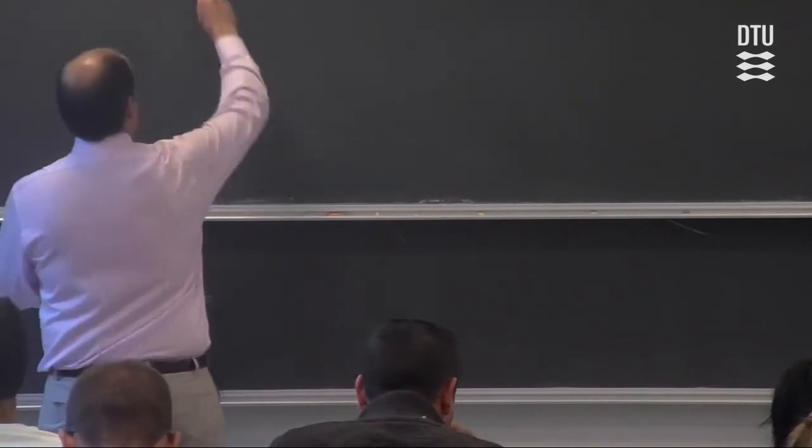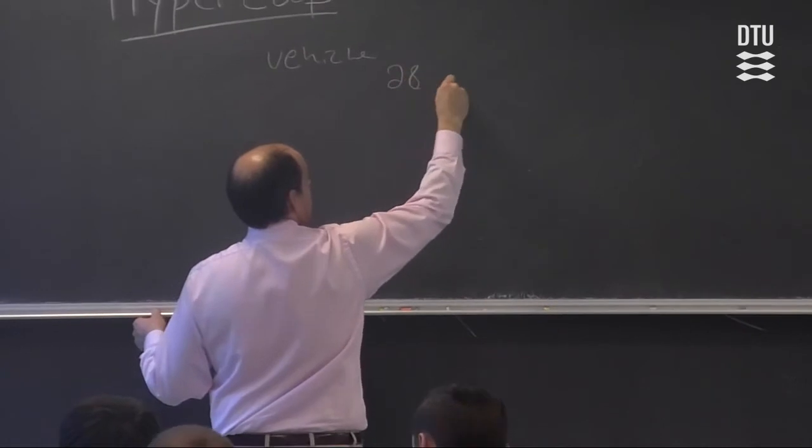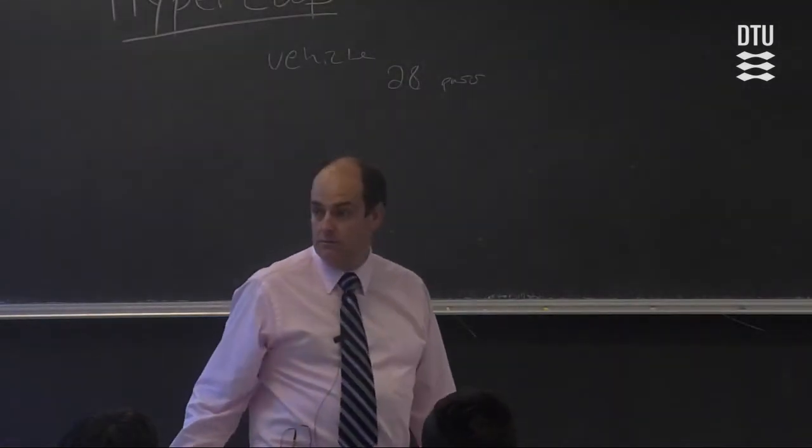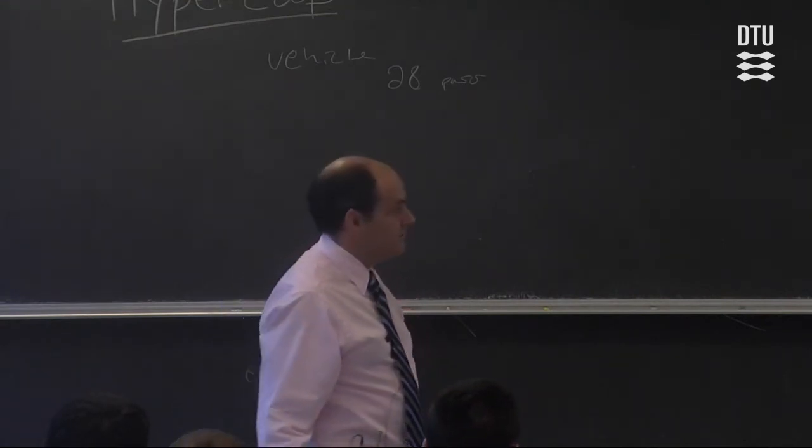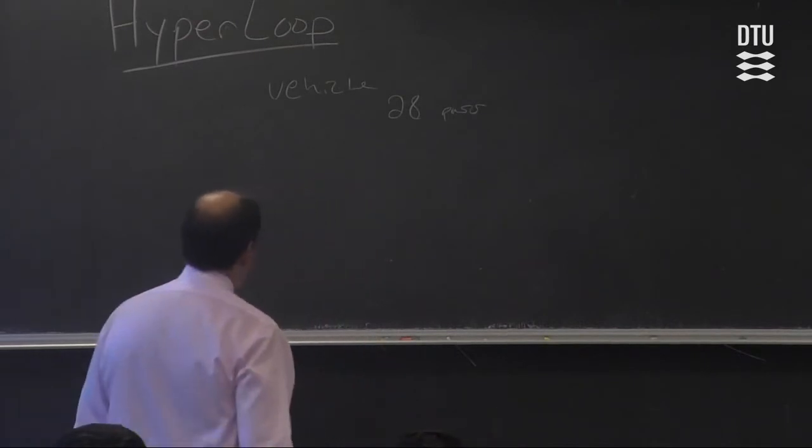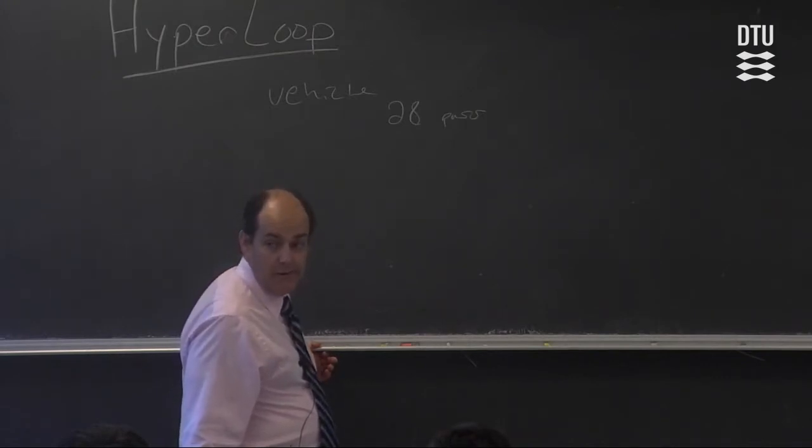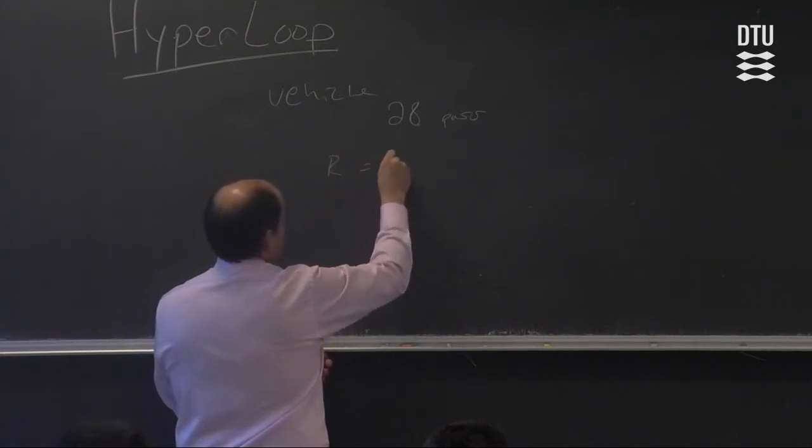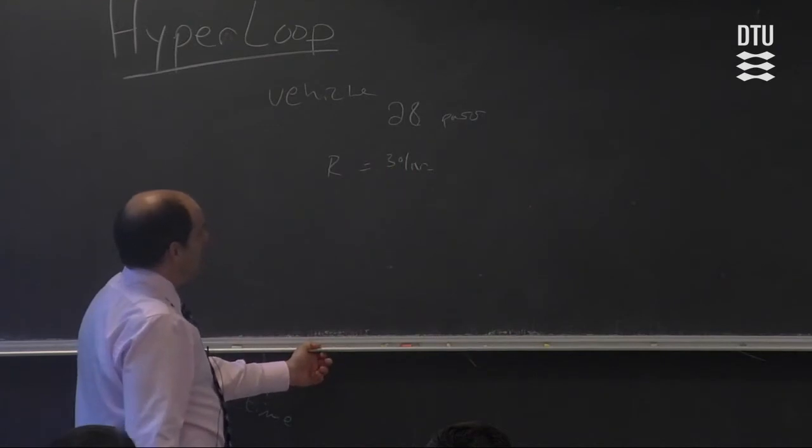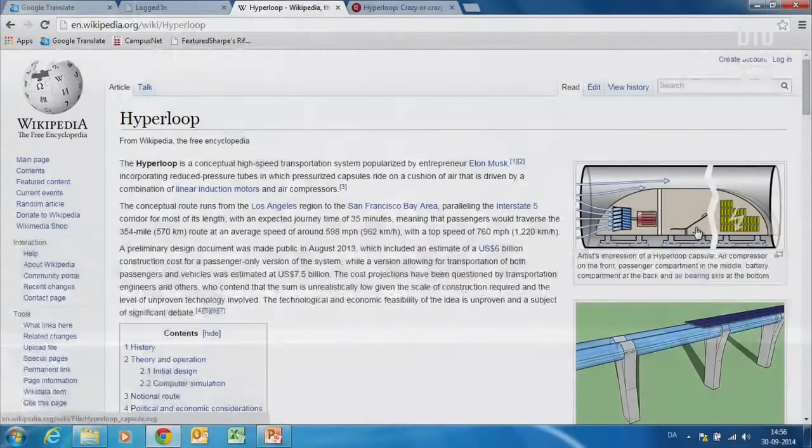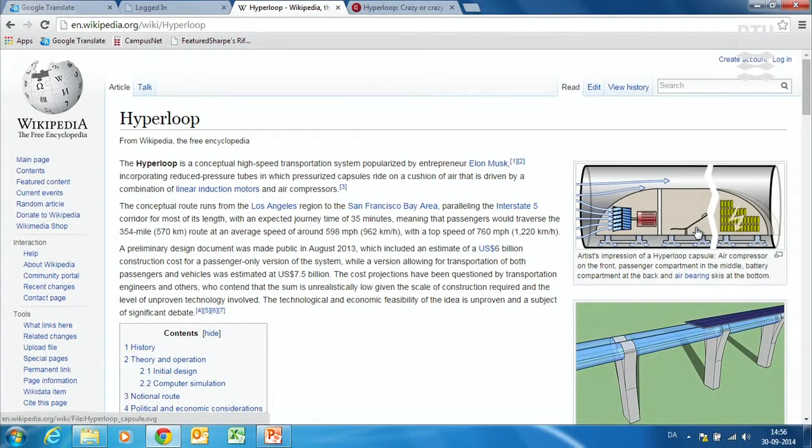The Hyperloop vehicle is going to hold 28 passengers, and we want to carry a flow of passengers from Los Angeles to San Francisco. They say we're going to go every two minutes on this tube, so that is a rate of flow of 30 per hour. The estimated journey time is 35 minutes.